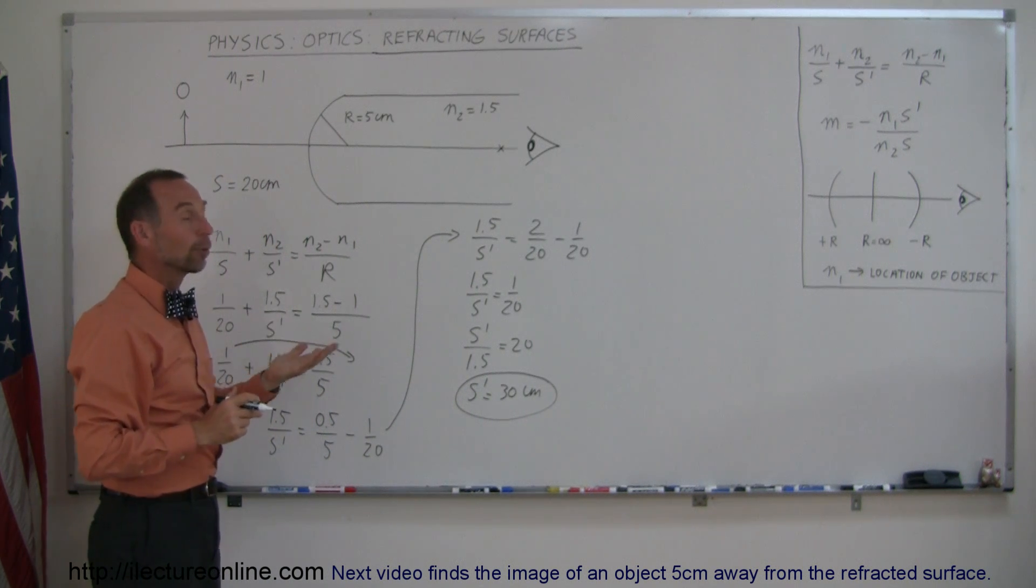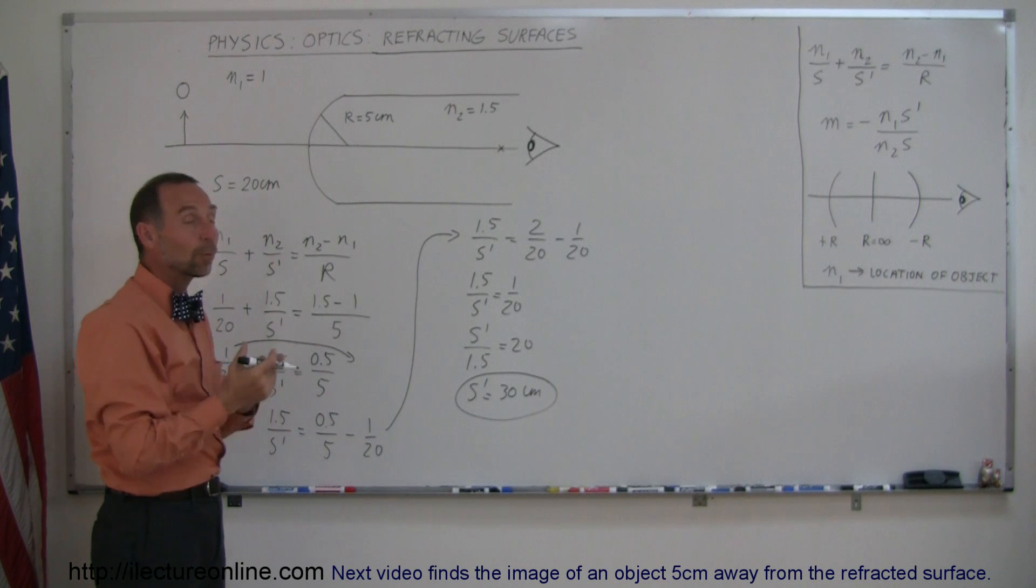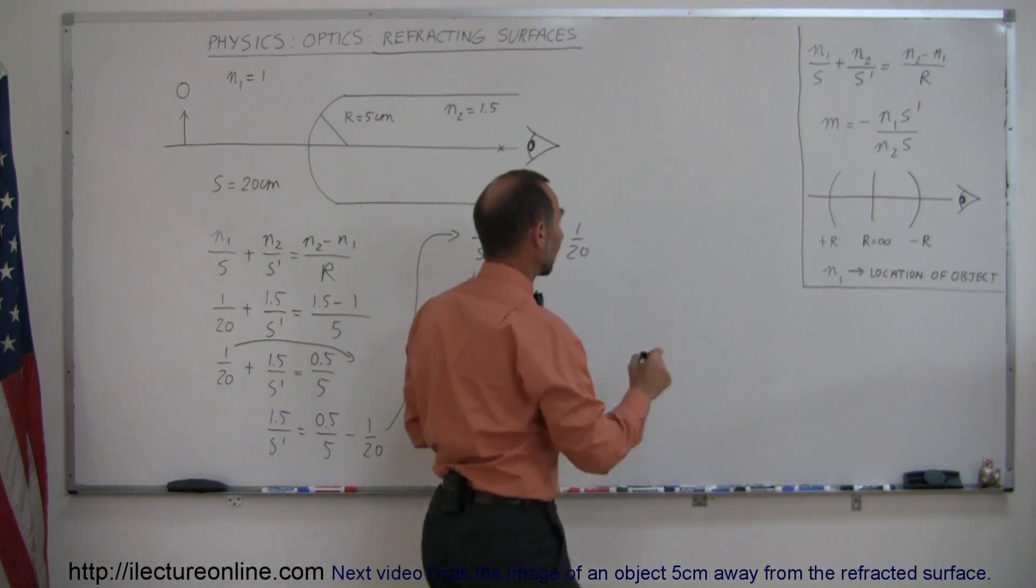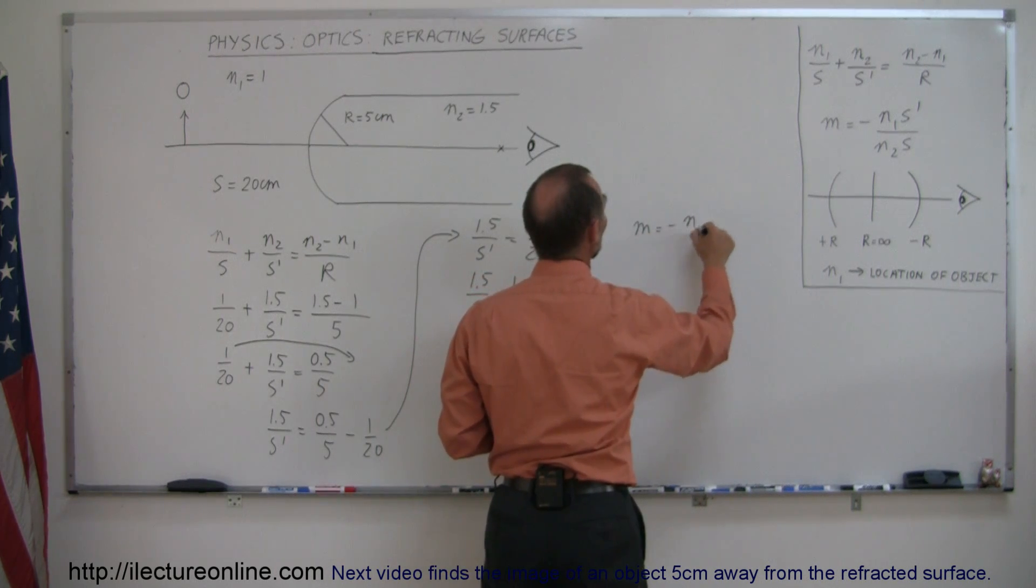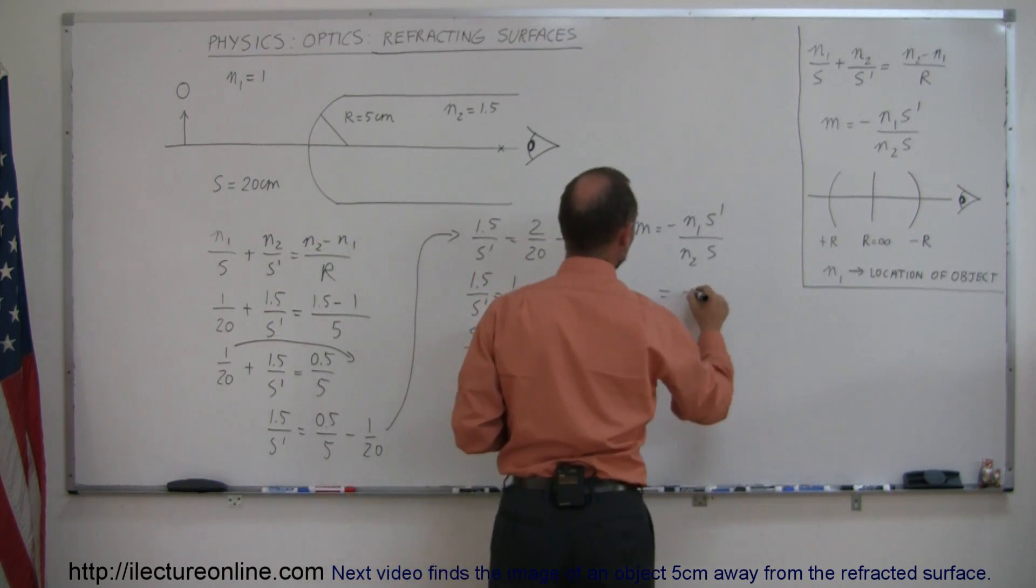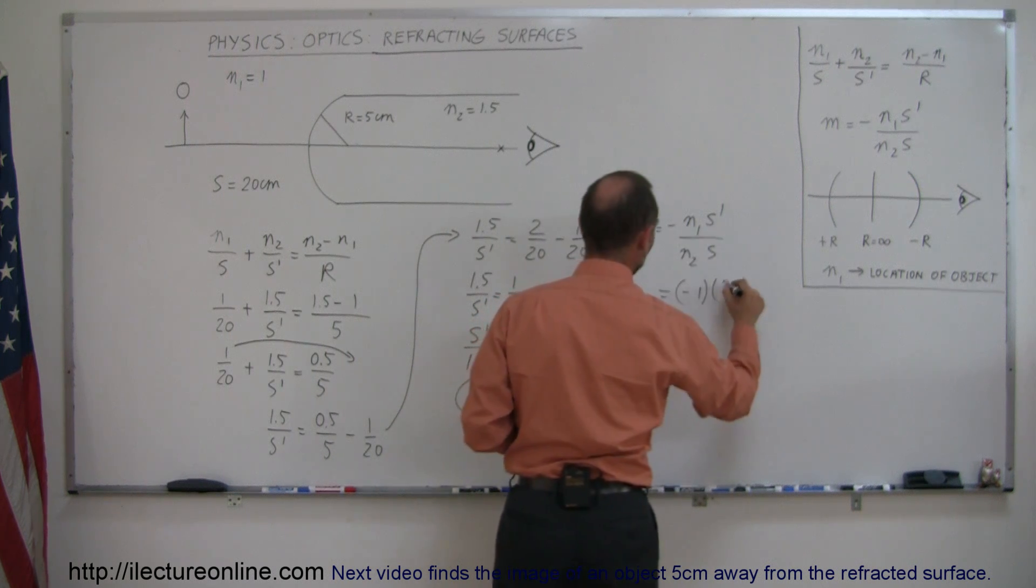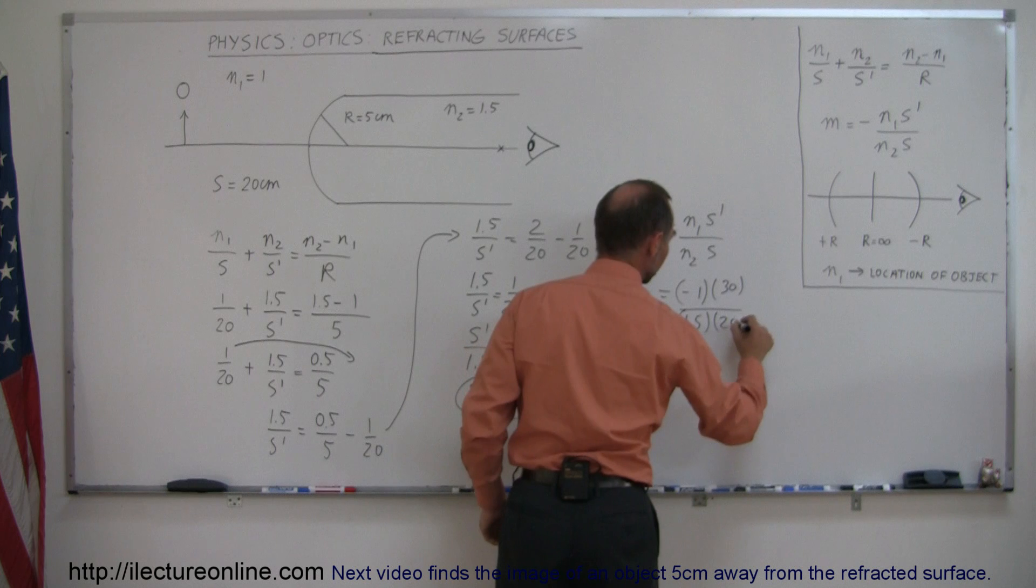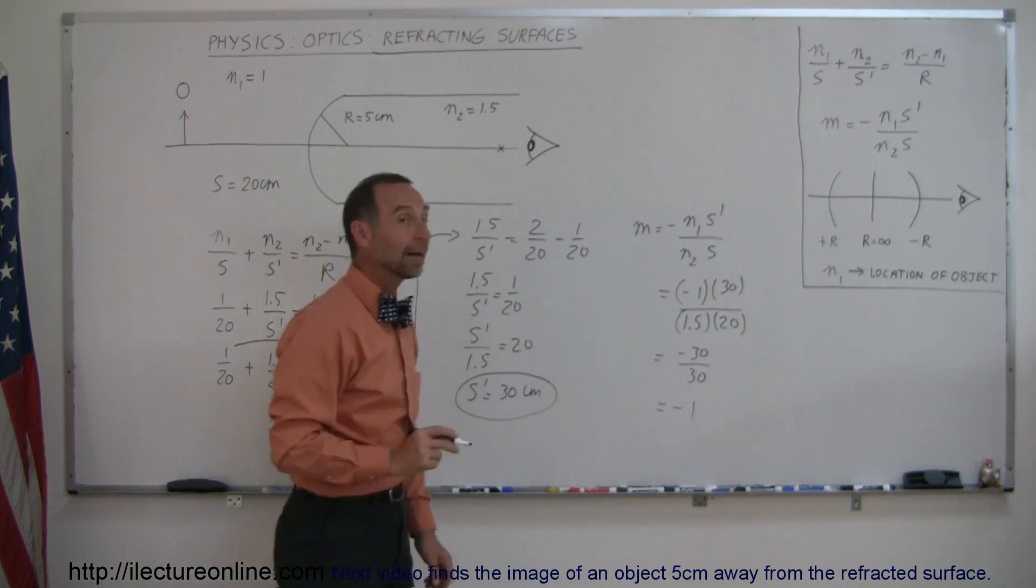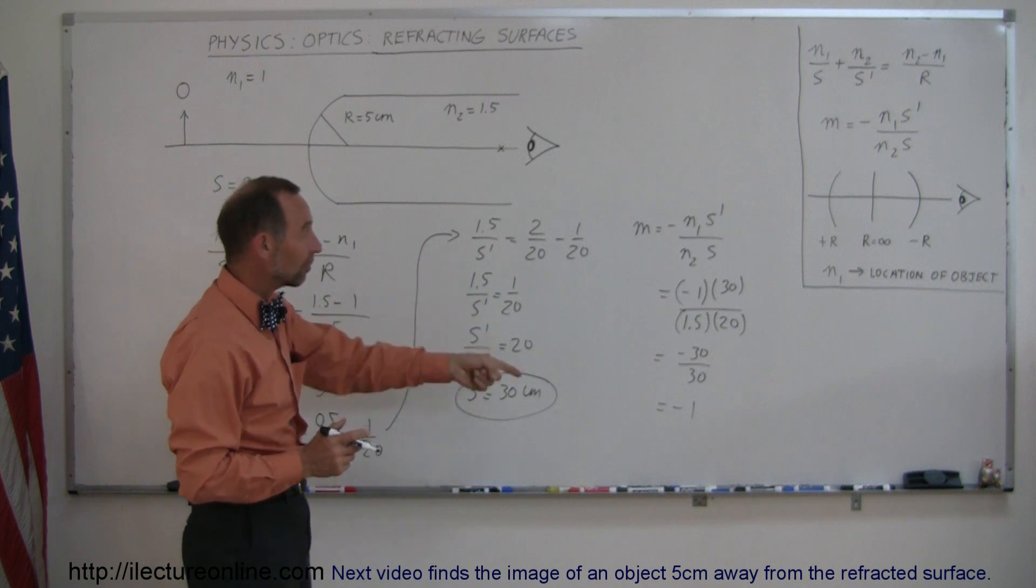Now, is it upright or inverted? And what is the size? That we don't know yet. So now let's use our equation for the magnification to find out what the image will look like. So the magnification is equal to minus N1 S prime over N2 times S. N1 is 1, so that becomes minus 1 times S prime, which was a positive 30, divided by N2, which is 1.5, multiplied times S, which was a positive 20. So this is equal to minus 30 divided by 30, which is a minus 1.